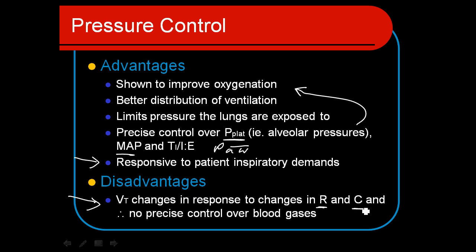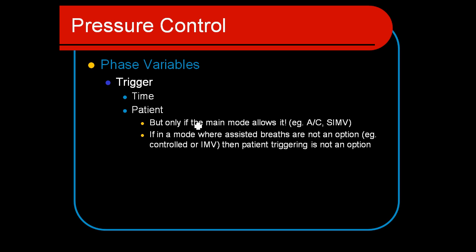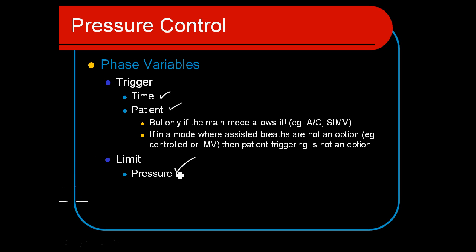The disadvantages are that we don't have direct control over tidal ventilation or minute ventilation. Changes in patient compliance will change the tidal volume, and thus we don't have as direct control over blood gases as we do with volume ventilation. The resistance doesn't usually change much since it's largely the resistance of the endotracheal tube, but lung compliance can change with disease. For phase variables, the trigger can be time or patient triggered, but the limit is always pressure limited and it is always time cycled.